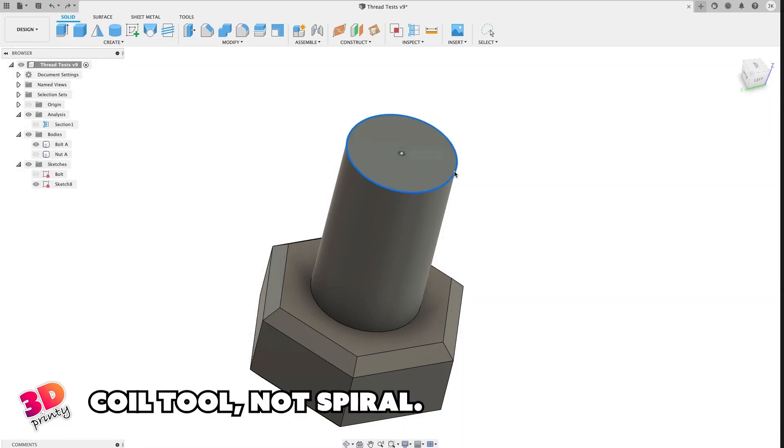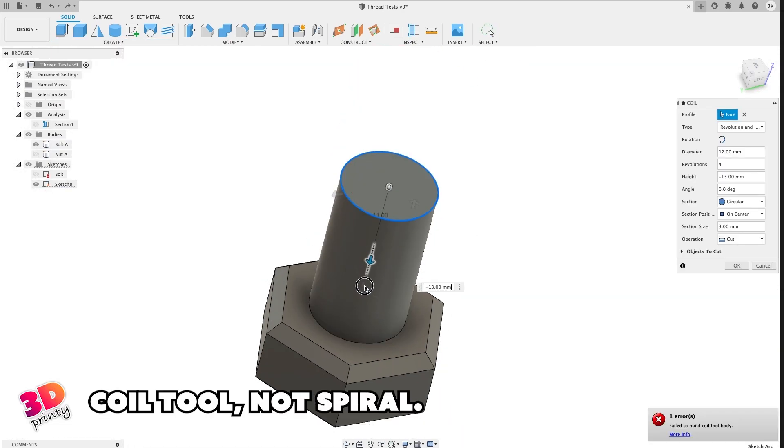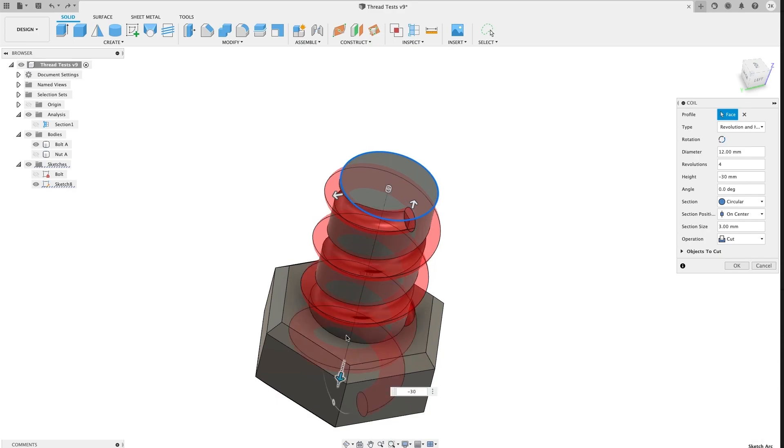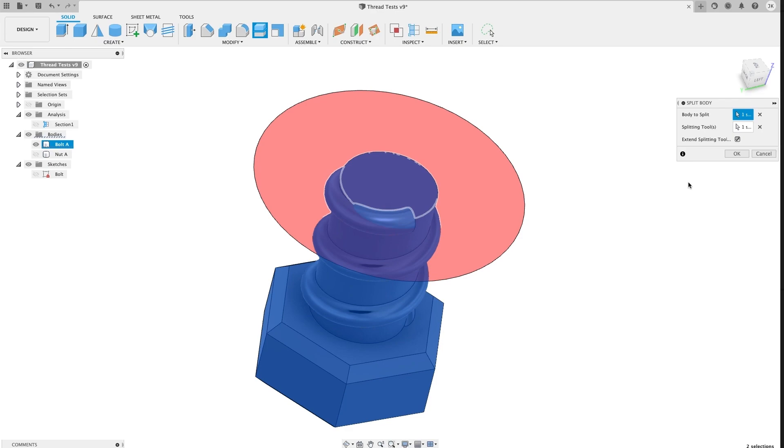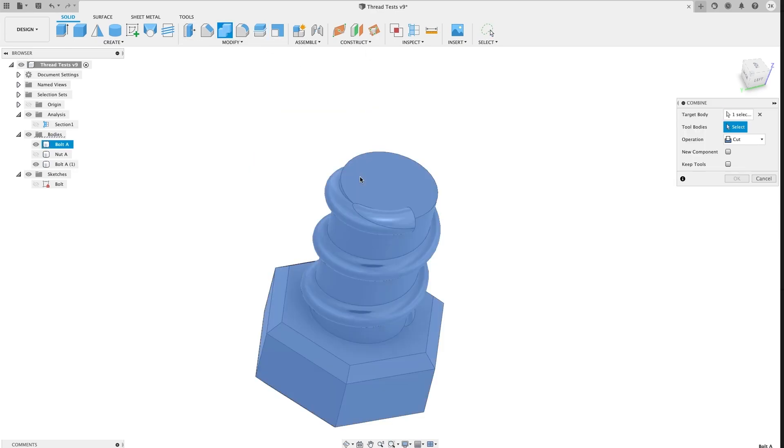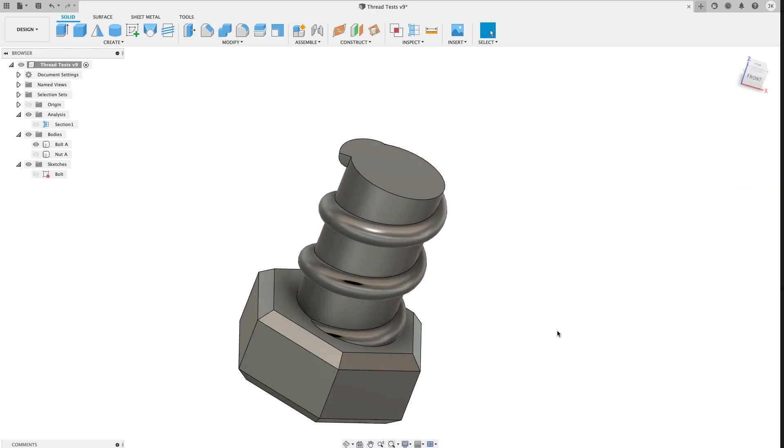For the next step, we could use the spiral tool to generate the inner and outer threads. The spiral tool is great if you're looking to make something unique like a double helix thread, or a thread that has a really extreme angle. But I'd like something that looks a bit more standard.